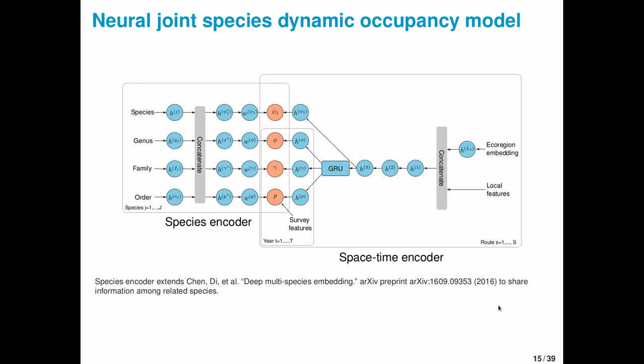Another component is a space-time encoder, which combines regional, local, and potentially time-varying information to generate spatiotemporally referenced latent factors. The combination of these latent factors with species-specific weights can give us our parameter estimates.